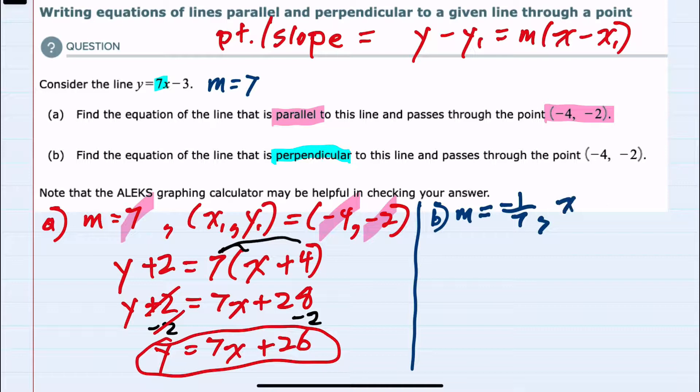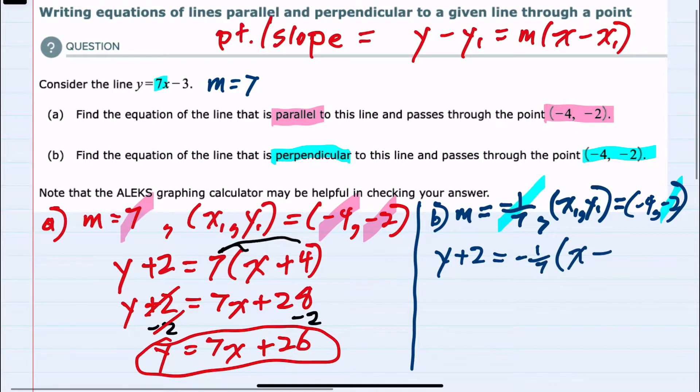Our point x1, y1 is again negative 4, negative 2, and from here we can once again substitute into the point-slope formula at the top. Our equation of the line would be y minus y sub 1, so minus a negative 2, plus 2, equals m, negative 1/7, times x minus x sub 1, which is again minus 4.